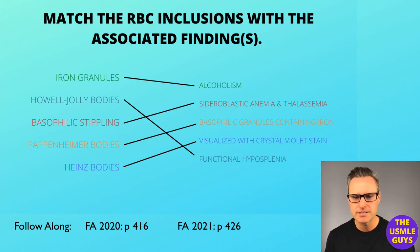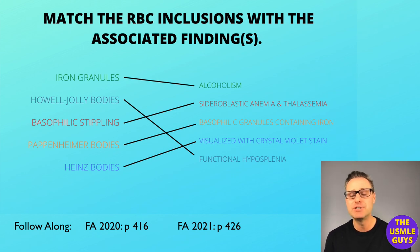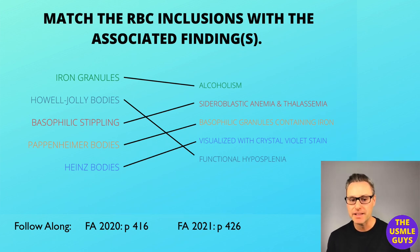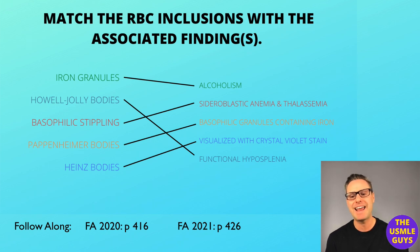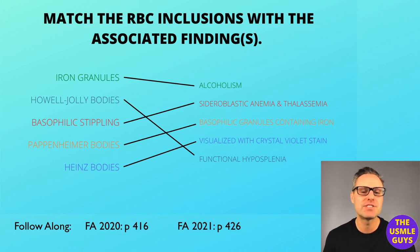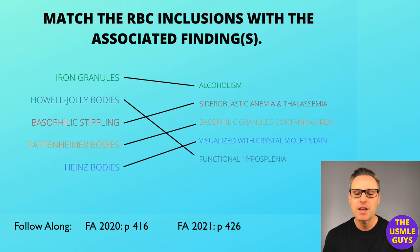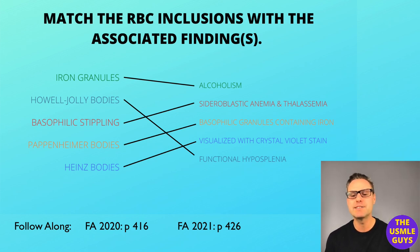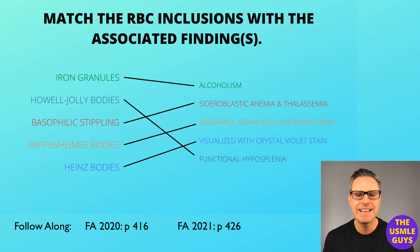On a peripheral smear, always be on the lookout for Heinz bodies, Howell-Jolly bodies, basophilic stippling, and Pappenheimer bodies. Howell-Jolly bodies are basophilic remnants that do not contain iron, and their presence is indicative of functional hyposplenia or asplenia. Basophilic stippling refers to the presence of basophilic ribosomal precipitates that do not contain iron, and these are seen in thalassemias and sideroblastic anemias. Pappenheimer bodies are basophilic granules that do contain iron, and are seen in sideroblastic anemia. Heinz bodies are seen in G6PD deficiency — they are due to denatured and precipitated hemoglobin, they do contain iron, and when removed via phagocytosis we get a bite cell. Heinz bodies require crystal violet stain to visualize.